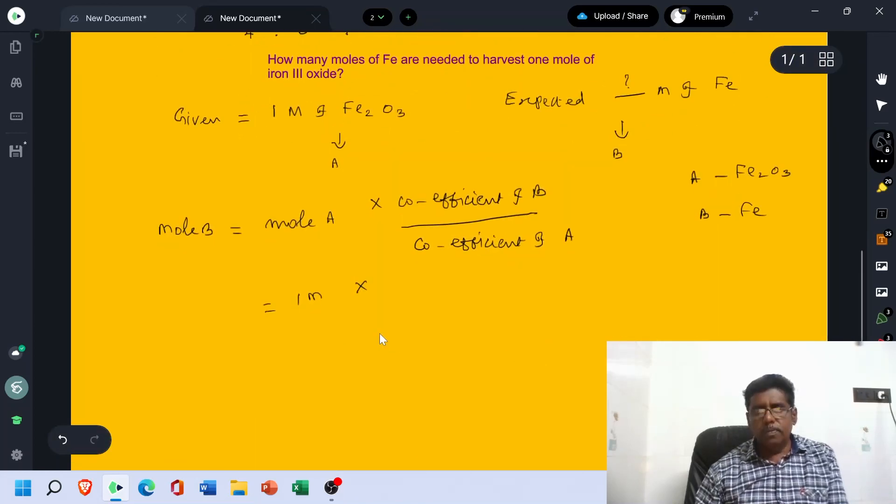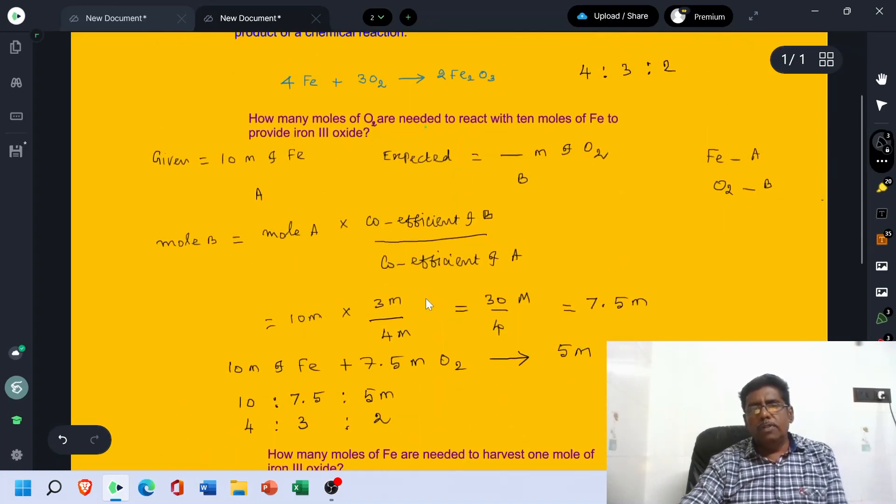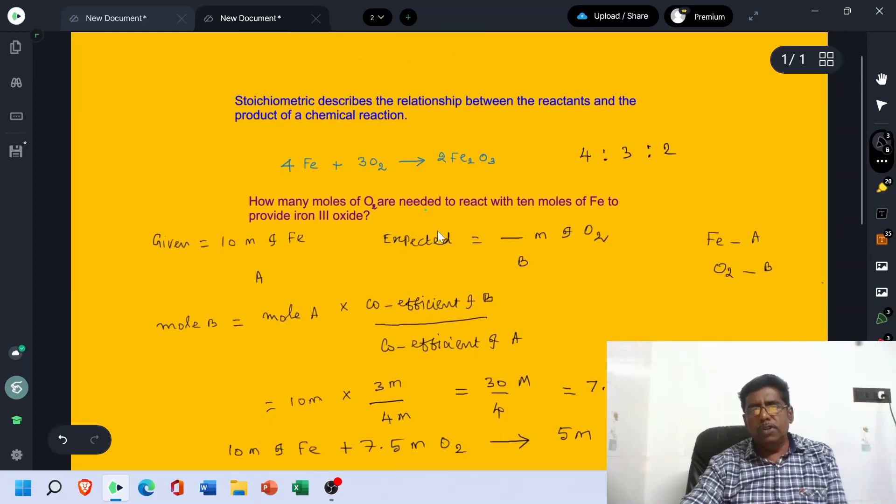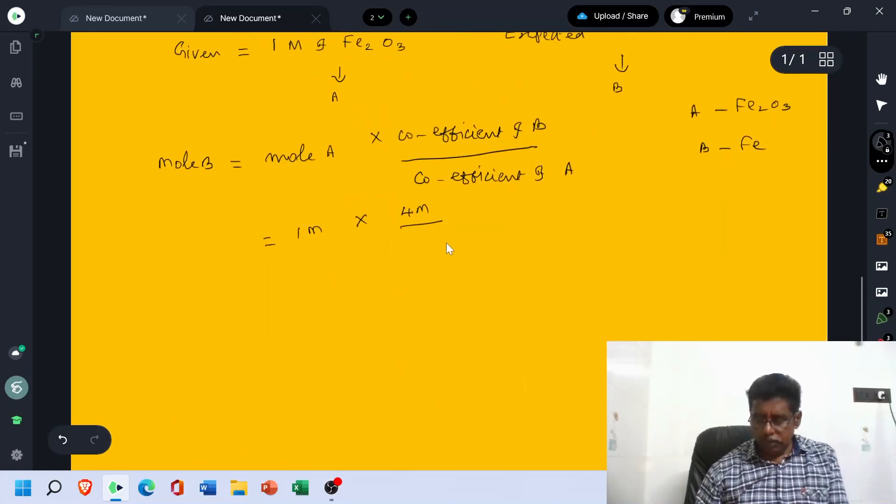So there is 4 mol. Which one is A? Fe2O3. What is the coefficient of Fe2O3 in the balanced equation? 2. It is 2 mol.